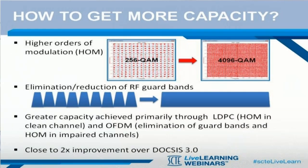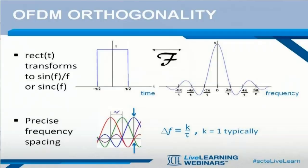That means we can reduce or eliminate guard bands and pack more bits per hertz into existing HFC networks with minimal changes. Since the OFDM subcarrier symbols are rectangular pulses in the time domain, they have the form of sinx over x, or sinc functions, in the frequency domain.